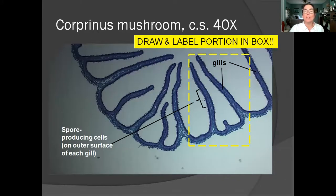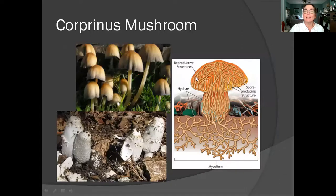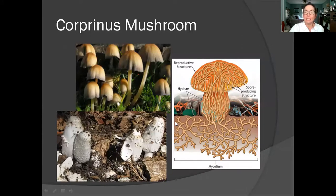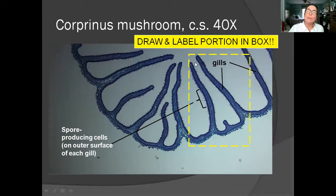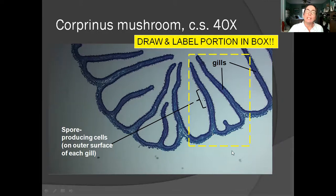Now we're going to look at that same type of mushroom but at a cross section — still at the lowest magnification. We took the cap and sliced it this way and put a slice on the microscope. We can see what are called the gills of the mushroom, which are extensions under the cap that radiate out. Lining the gills all along the way are the cells that produce spores, and inside the gills there's more hyphae cells, just clumped together to make up the body. Draw and label what you see: the gills and the spore-producing cells.